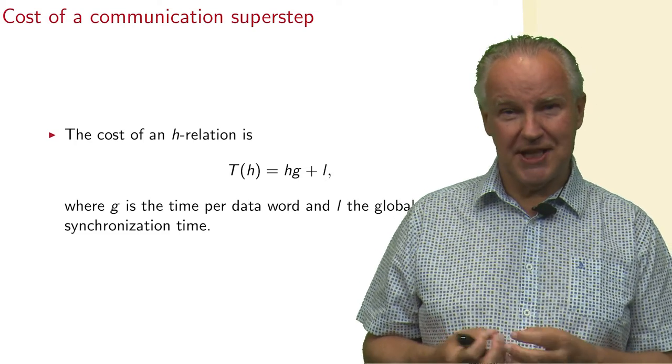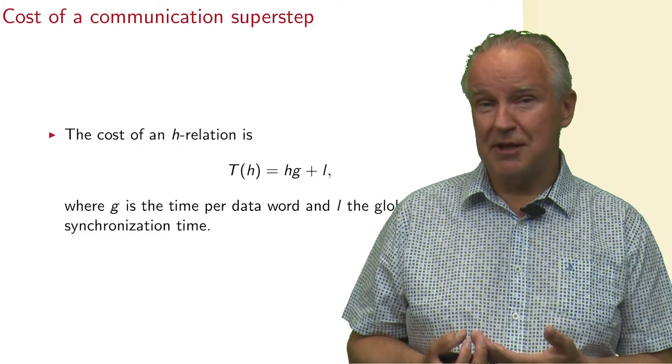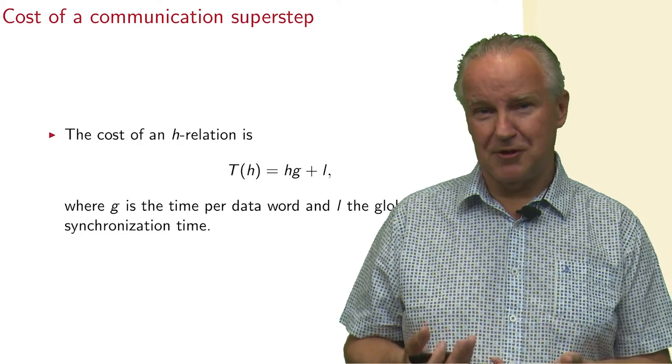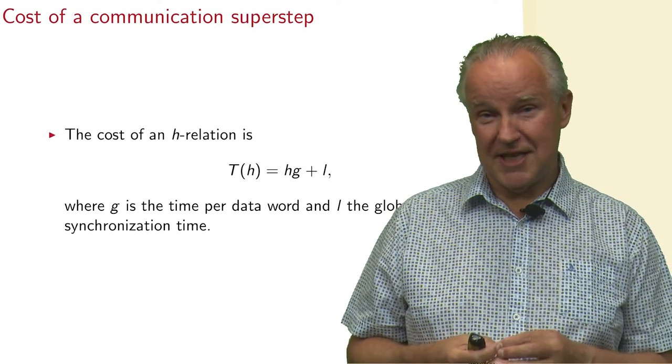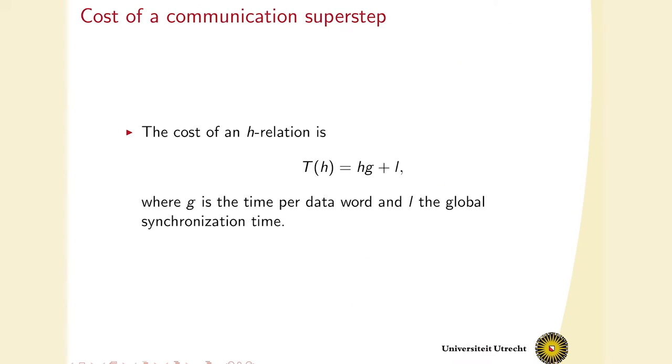And then it depends on the machine that you have, what the time per data word is. The time, we also call it the cost. Time is money in this case. The cost of sending one data word is G. And the G comes from the word gap, the gap between two different data words that are being sent. So, H times G. But we also have a fixed cost. That's the cost for the global synchronization. You pay that for a super step. Whether it's a communication or computation super step, you always have to pay this fixed cost.